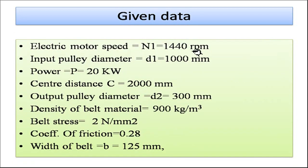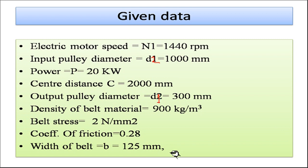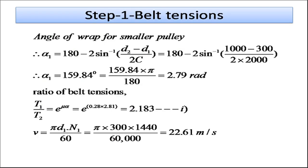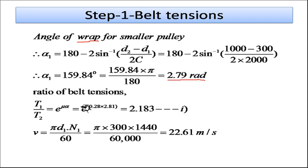We note the given data: input rpm = 1440, input pulley diameter d1 = 300 mm, output pulley diameter d2 = 1000 mm, belt stress = 2 N/mm², coefficient of friction = 0.28, belt width = 125 mm. First, we calculate the angle of wrap for the smaller pulley using the formula with d1, d2, and C = 2000 mm, giving α = 2.79 radians.